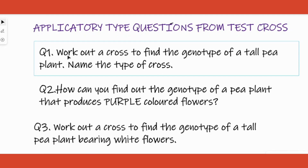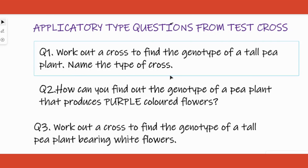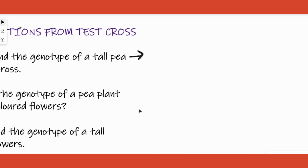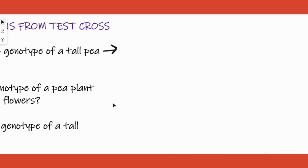The first question says: work out a cross to find the genotype of a tall pea plant. The type of cross is a test cross. We know that tall plants indicate a dominant trait. You only need to do a test cross for a dominant trait, because for a recessive trait you already know it is going to be homozygous.